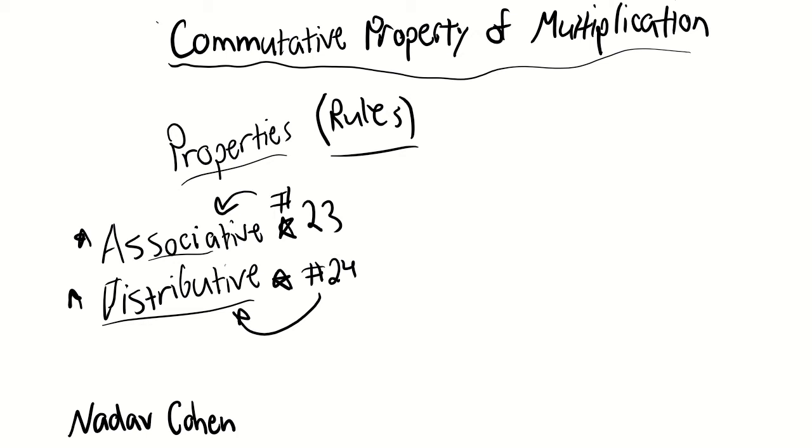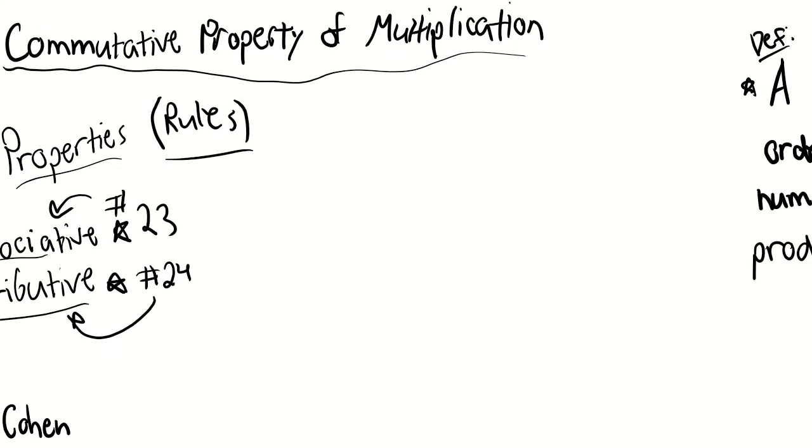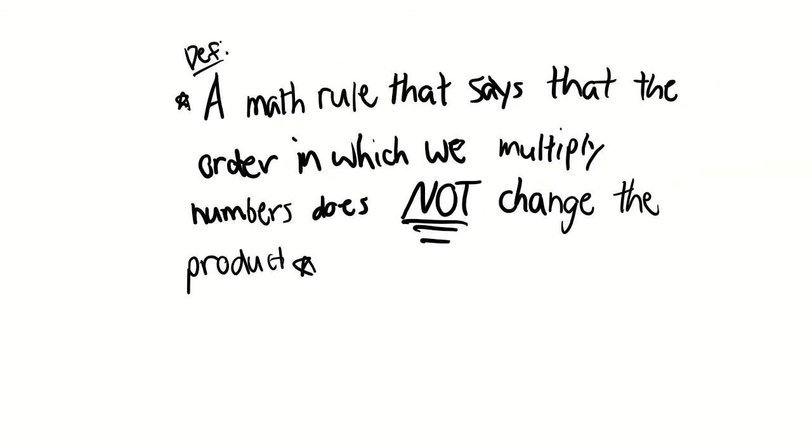So, properties. There are kind of what people like to call properties in multiplication, which can be sort of like rules. There are three of them: the commutative, which is the most simplest one, easiest one to understand. The next video will be associative, and the next one after that will be distributive property. So, the 23rd video will be on this, and the 24th will be on that. The commutative property is a math rule that says that the order in which we multiply numbers does not change the product.